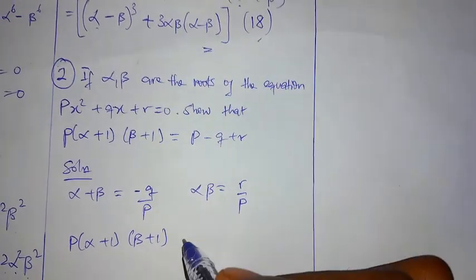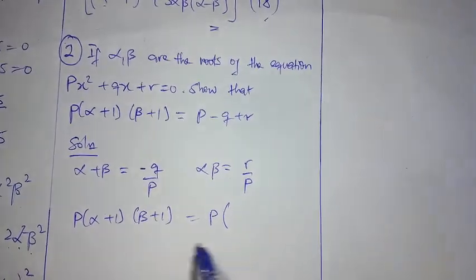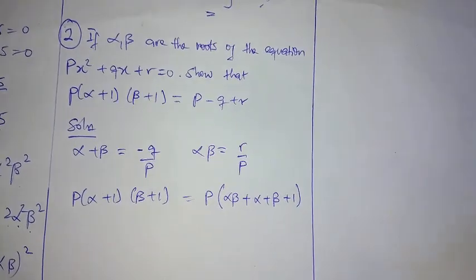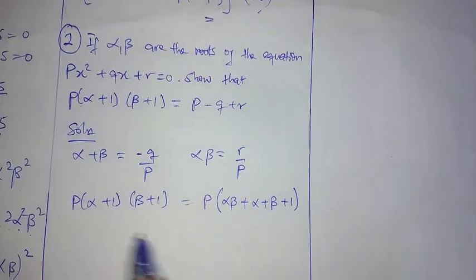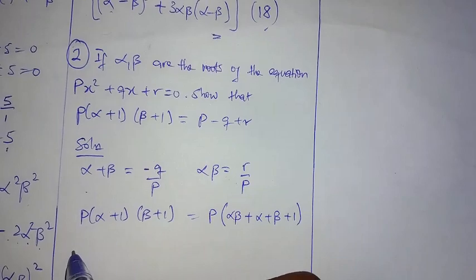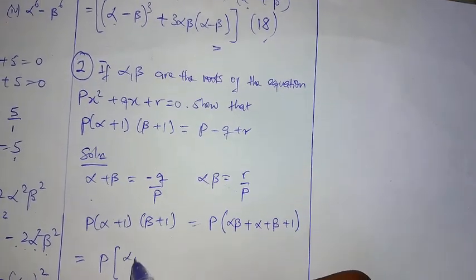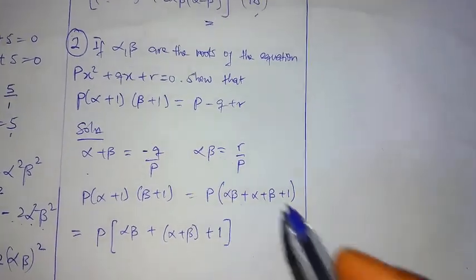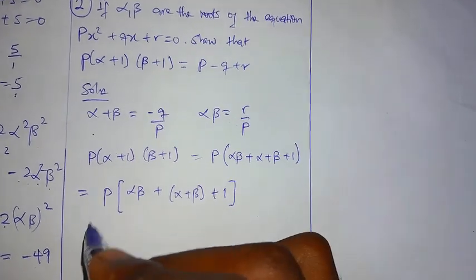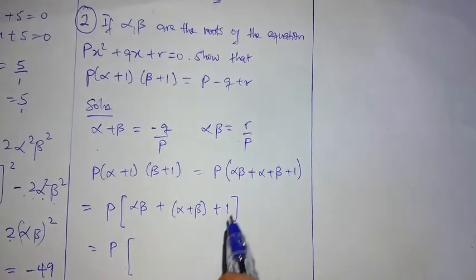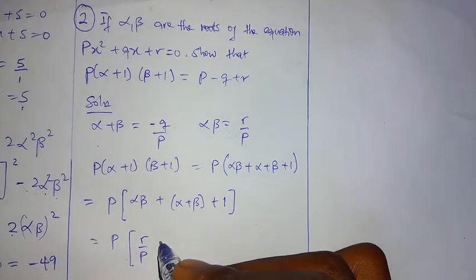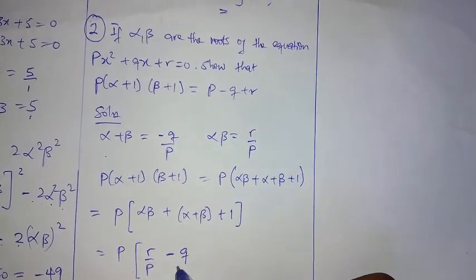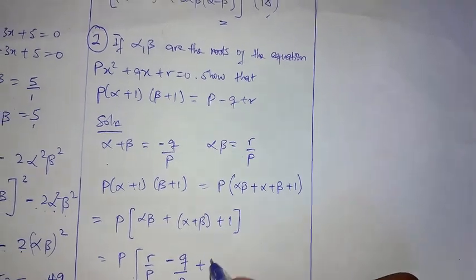Proving from the left hand side: p(α+1)(β+1). Expanding the bracket gives p times (alpha·beta + alpha + beta + 1). Substituting: alpha·beta is r over p, and alpha plus beta is minus q over p. So this becomes p times (r/p minus q/p plus 1).